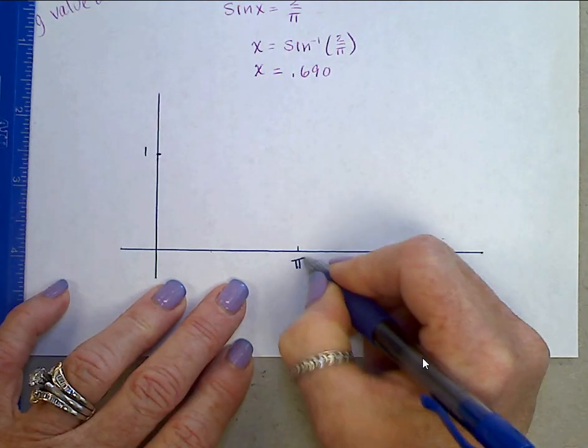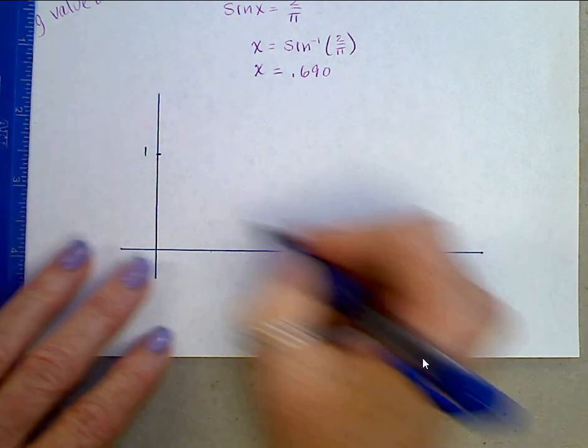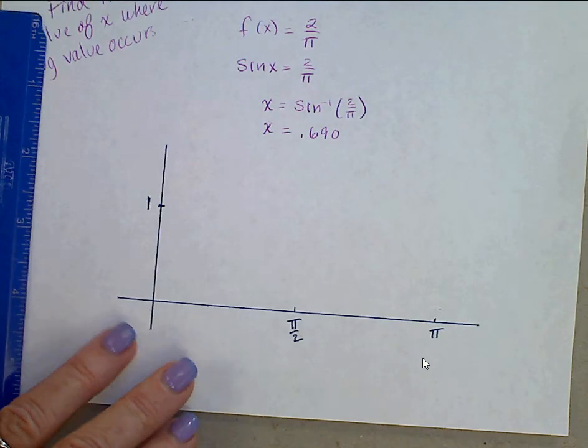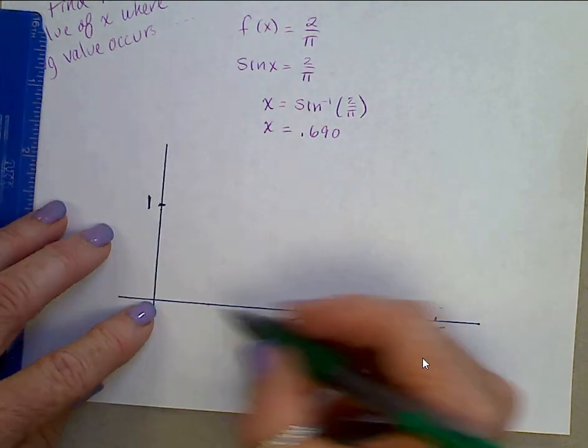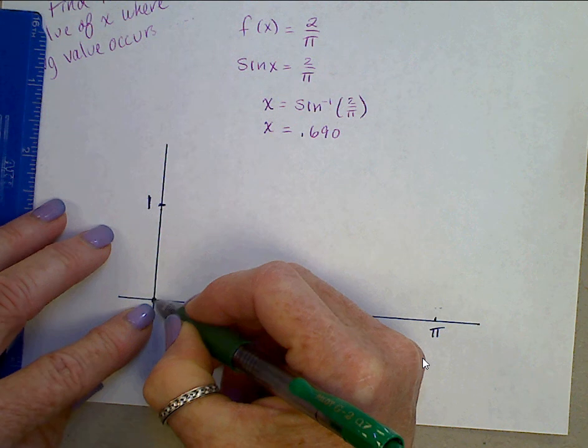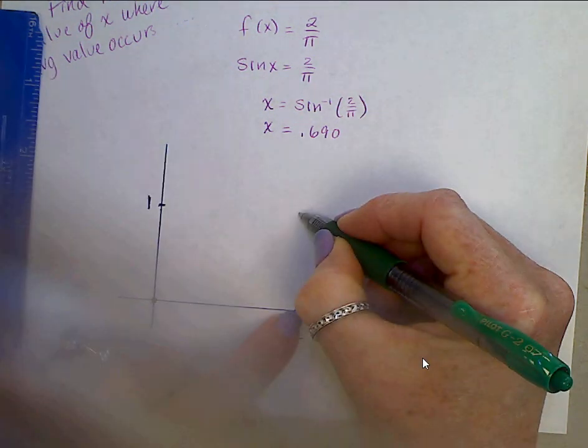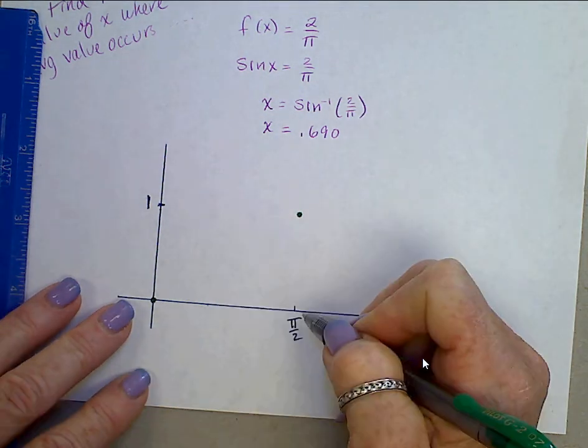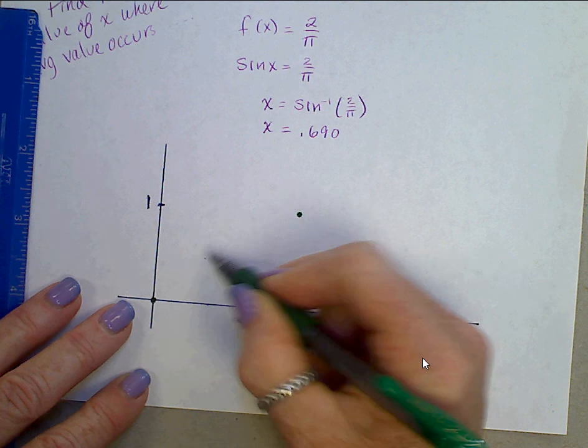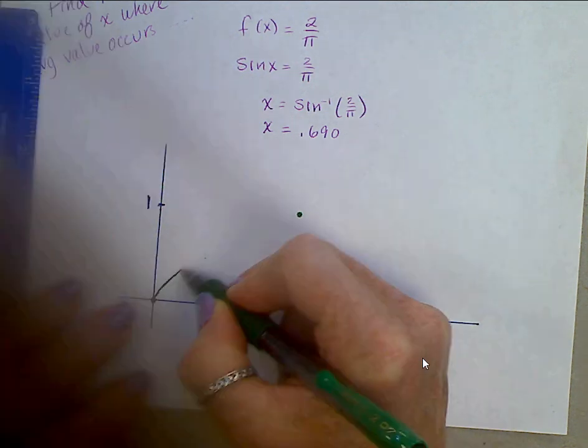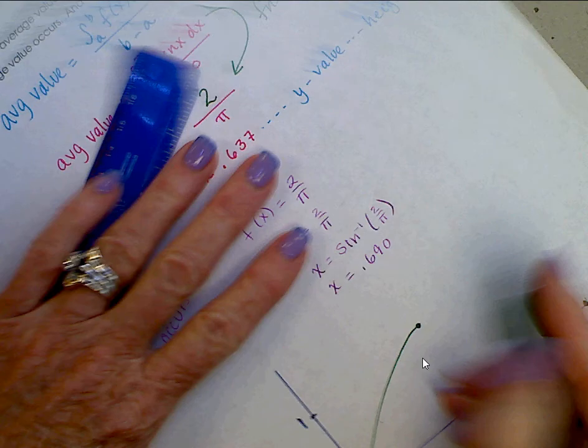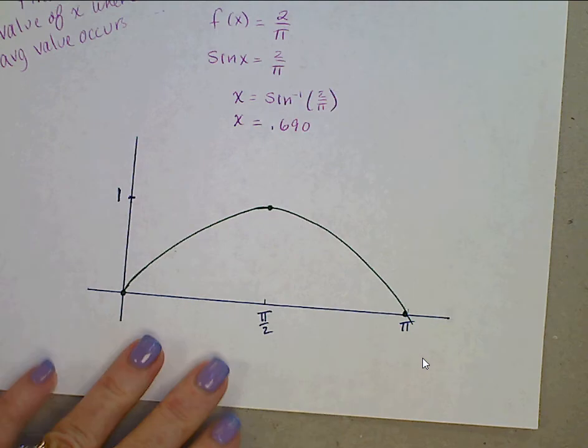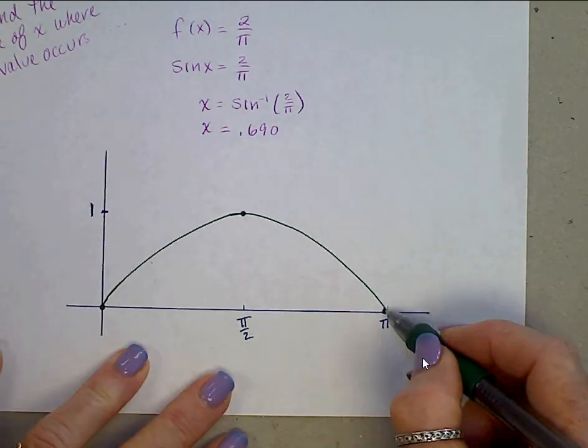And here's pi over 2, here's pi, there's 1, and I am making this greatly enlarged just so we can see everything that we need to see. And to graph y equals sine x, sine hits at 0, 0, pi over 2, the sine is 1, and at pi, the sine is back to 0.